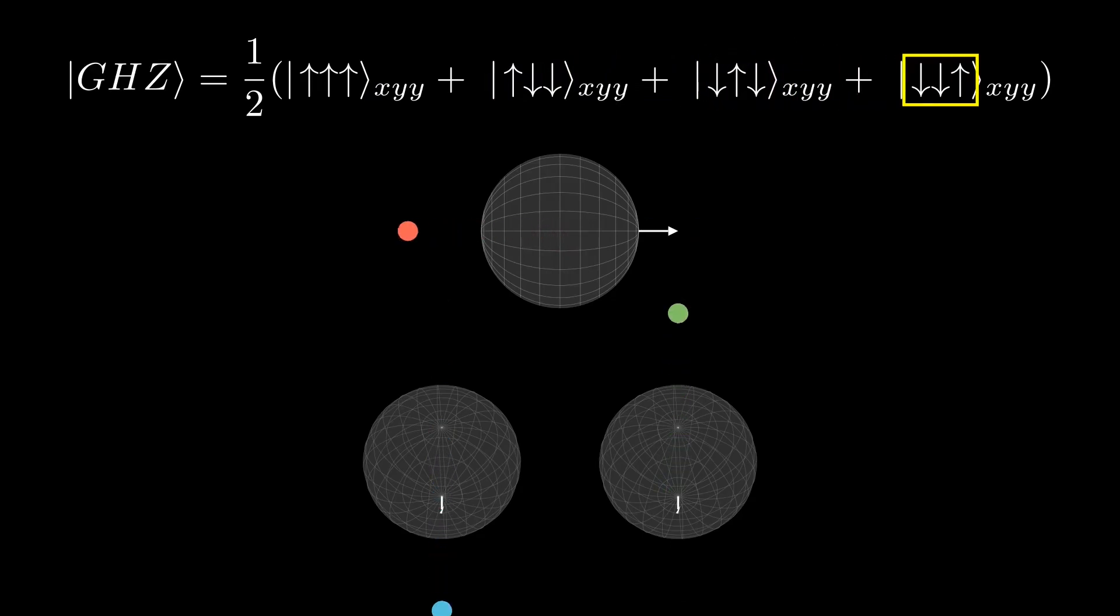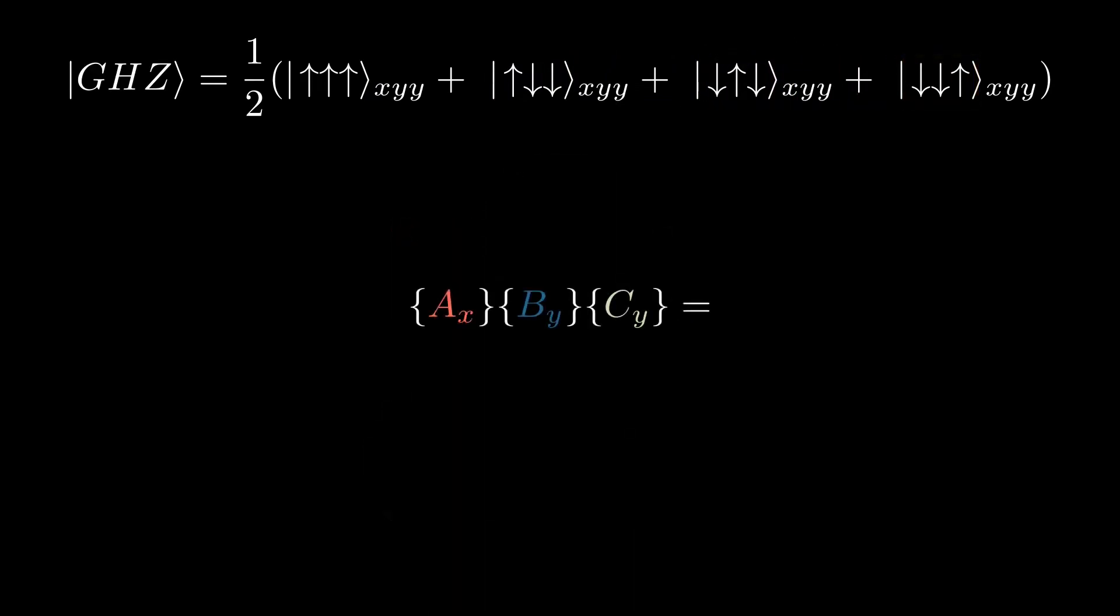To get our second equation, consider the product of AX times BY times CY. See here that you're either multiplying three positive numbers or one positive times two negatives. So for all four of these cases, you're going to get plus one.